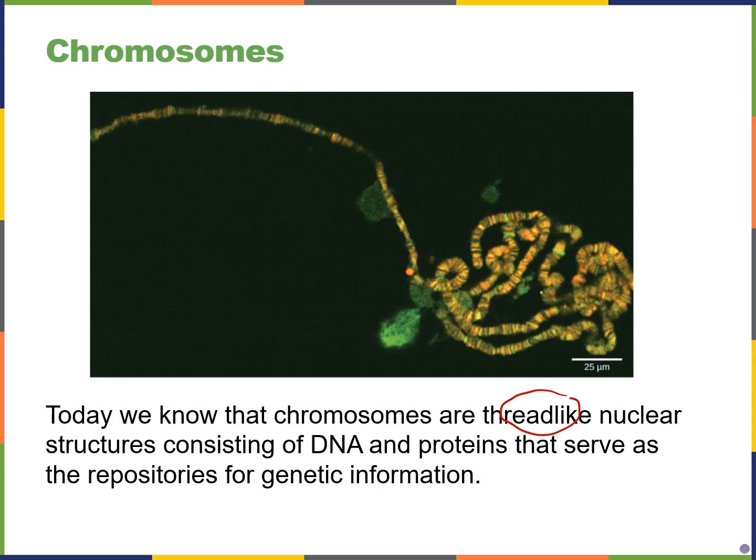We know that chromosomes are thread-like structures. In a previous lecture, we talked about how DNA is wrapped around histone proteins and condensed further until we get these chromosomes. We know that along the length of our chromosomes, we have unique genes — genetic information that is going to encode proteins, as we'll see in a future chapter.